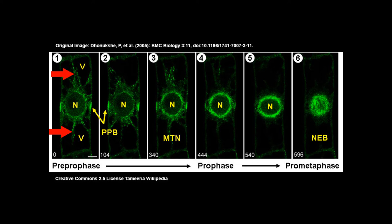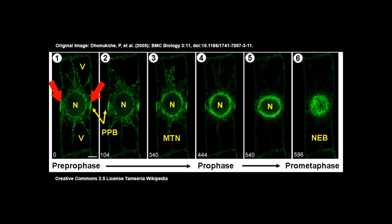At the same time, the nuclear envelope breaks up into little pieces and the nucleolus becomes less distinct. The pre-prophase band, made of actin filaments and microtubules, forms around the center of the cell. It marks the planar division and the location of the new cell wall. The pre-prophase band then disappears and is recycled into the spindle.